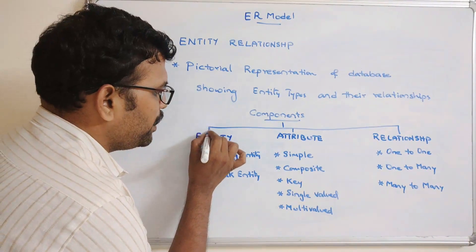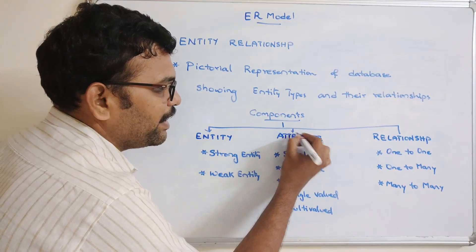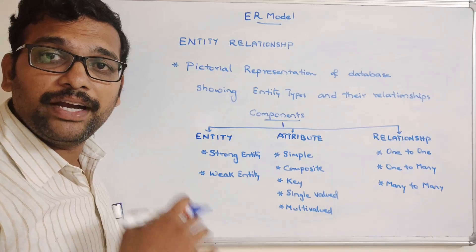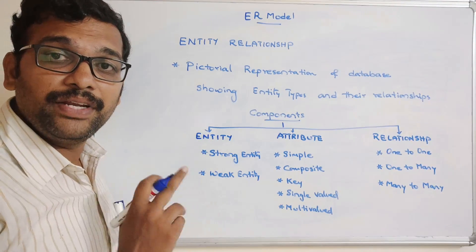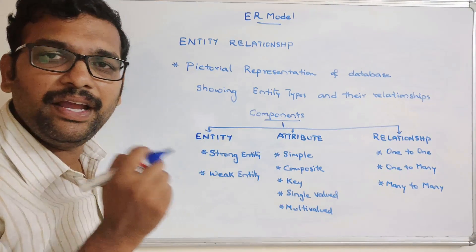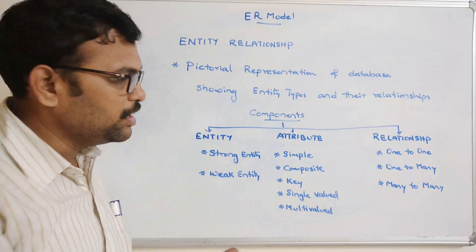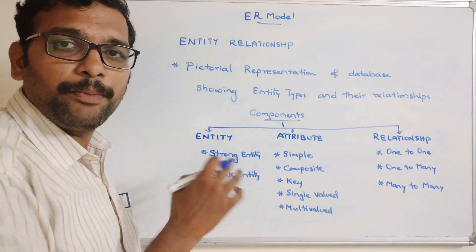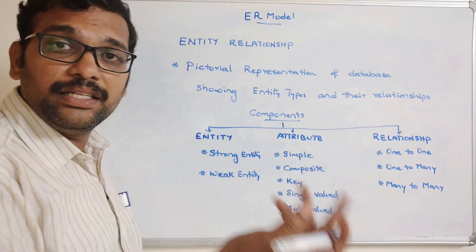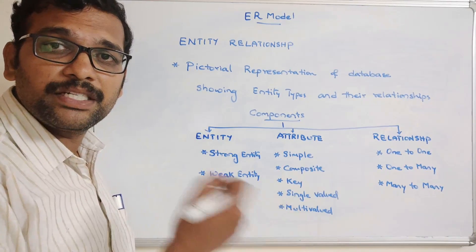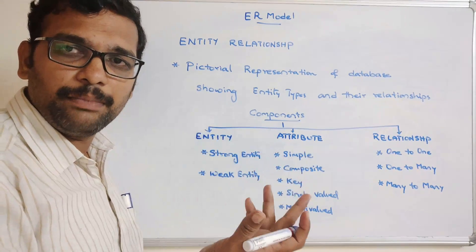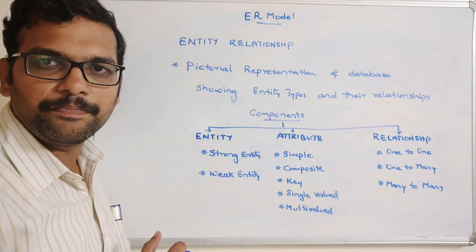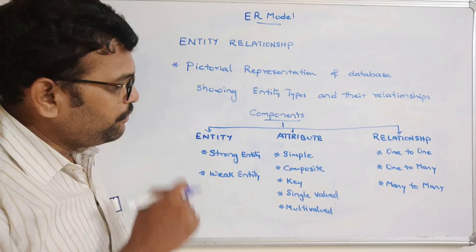First we need to identify the entities, then we need to identify the attributes — for every entity there will be different attributes. Then we have to identify the relationships among the different entities, because in RDBMS there should be a relation between two different tables, and that relation should be defined with the help of the relationship component.